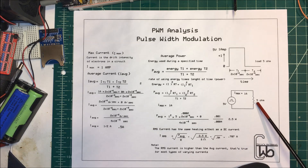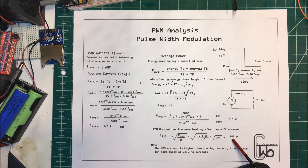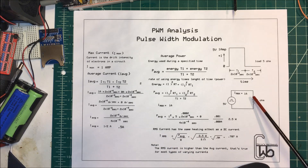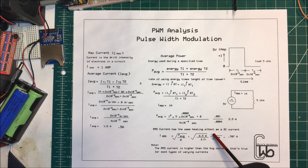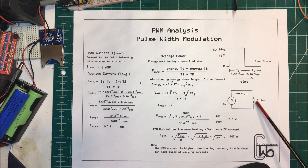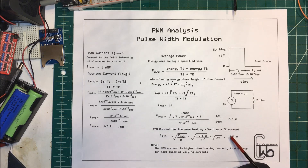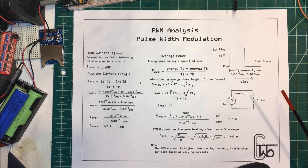When we calculate the wattage of this resistor, we use the RMS value. It's related to the amount of heat — it has the same heating effect as a DC current does. So we'll use this RMS value when we rate the resistor.